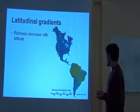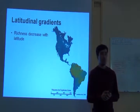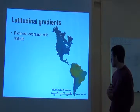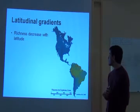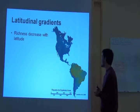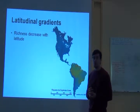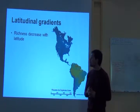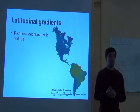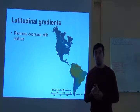The most famous and most studied one is the latitudinal gradient in species richness. Here I bring an example with the species richness of birds. Species richness tends to decrease with latitude — the more you go far away from the equator, the fewer species you find.